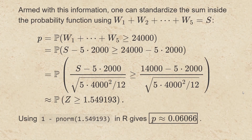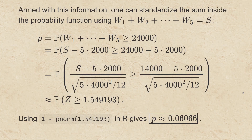Armed with this information, one can standardize the sum inside the probability function. So if I want the probability that w sub 1 plus w sub 2 and so on up to w sub 5 is at least 14,000, I can first subtract the mean of the sum, which is 5 times 2,000, from both sides of the inequality. Then I can divide both sides by the standard deviation of s. The thing on the left I can then approximate as a standard normal. The expression on the right of the inequality comes out to be about 1.549193. Using 1 minus pnorm(1.549193) in R gives a probability of about 0.06066.